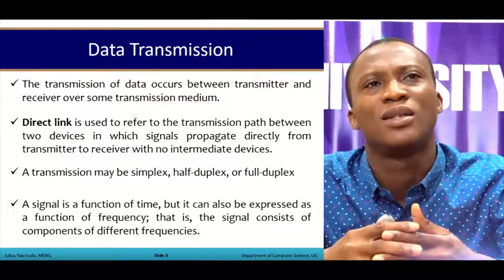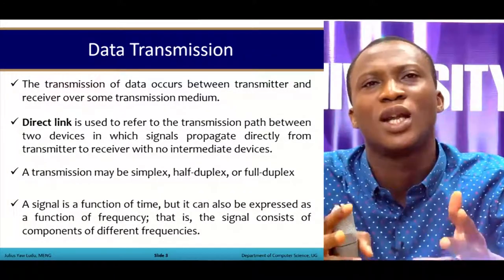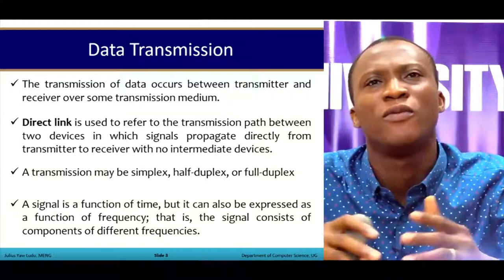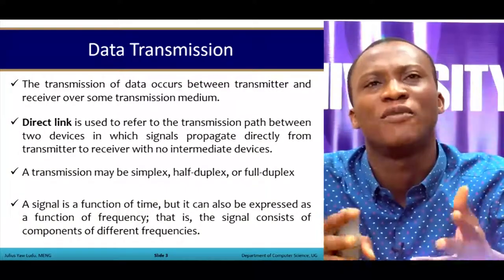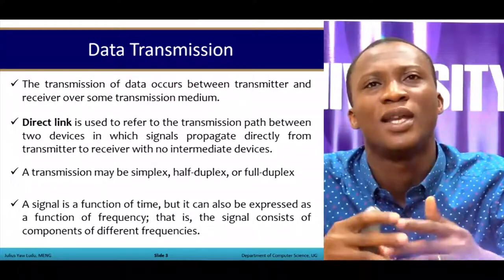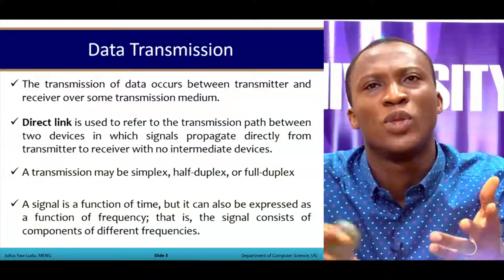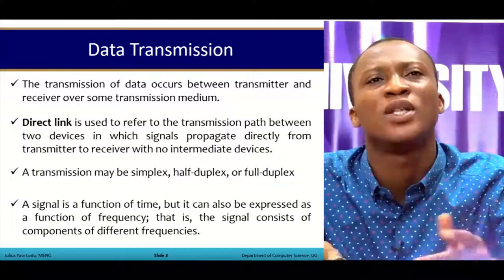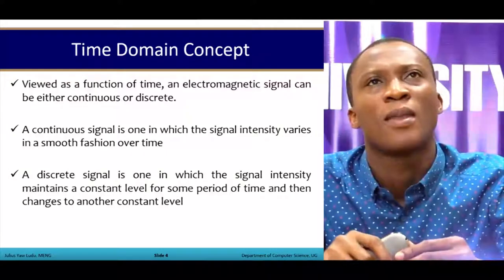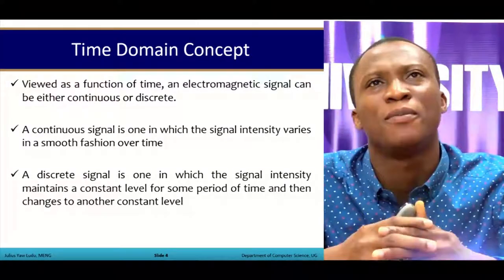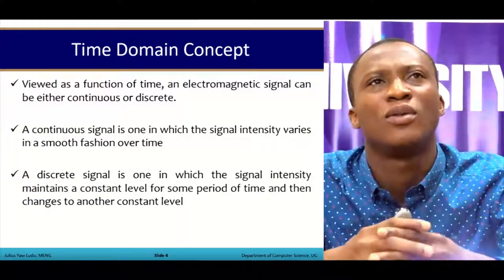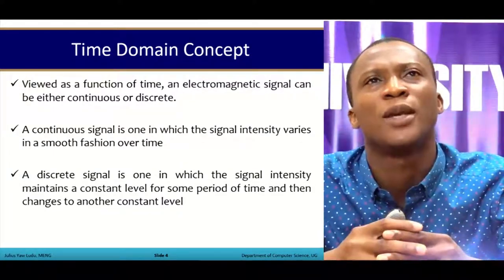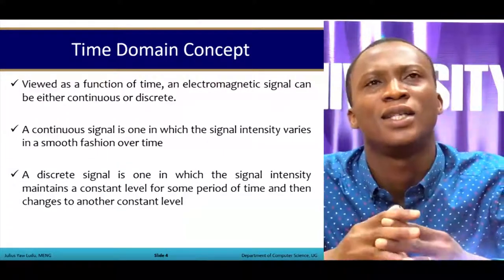Now we look at what a signal is. A signal is a function of time, which can also be expressed as a function of frequency. We will be looking at two concepts: the time domain concept and the frequency domain concept. When a signal is expressed as a function, it consists of components of different frequencies. In the time domain concept, an electromagnetic signal can be either continuous or discrete.